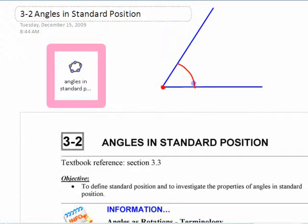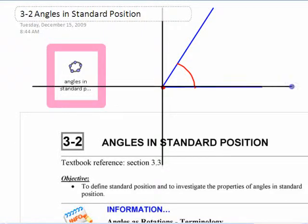Putting an angle in standard position is basically just saying I would like to put a set of coordinate axes on this angle so that I can talk about points that are on the arm.